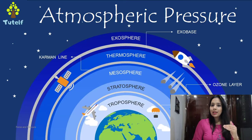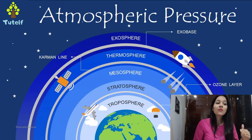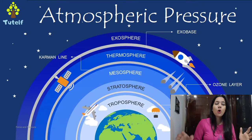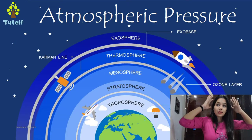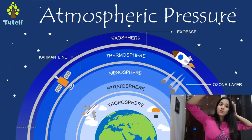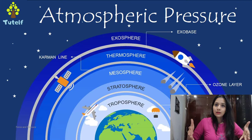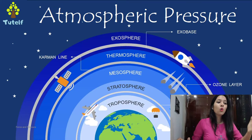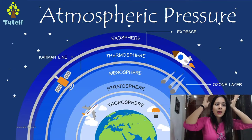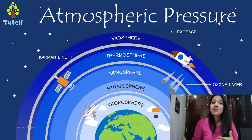At the sea level, on the surface of the earth, the atmospheric pressure is maximum. This is because the column of air above us — from exosphere, thermosphere, mesosphere, stratosphere, troposphere — all the particles are exerting their weight. So the column of air above us is tallest at the sea level, and we experience maximum atmospheric pressure.